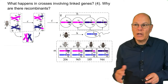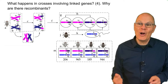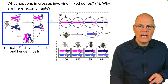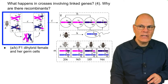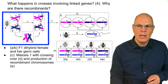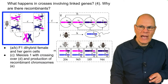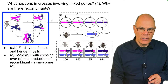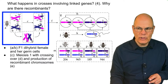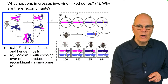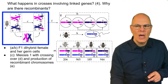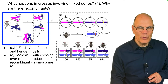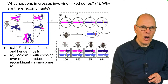What happens in crosses involving linked genes? Why are there recombinants? In diagrams A and B, we have a dihybrid female and her germ cells. In diagram C, we have meiosis I with crossing over — homologous pairs get together, swap genes, and produce recombinant chromosomes. Notice that some of the sister chromatids are recombinant and some aren't.